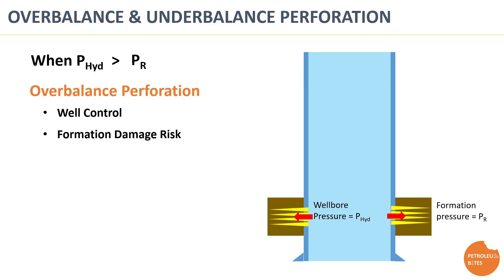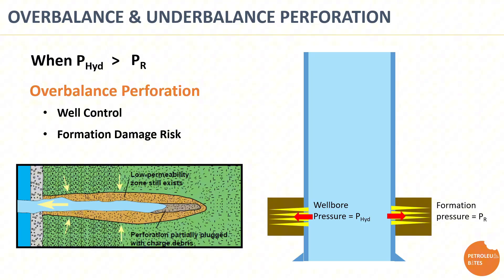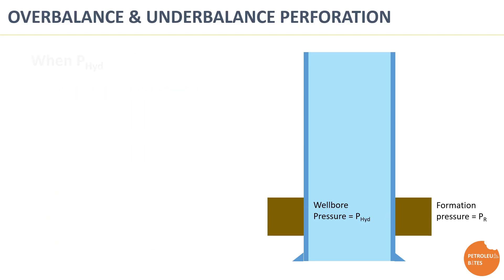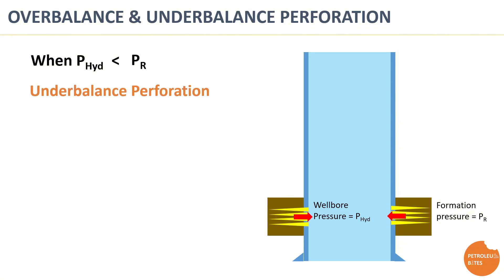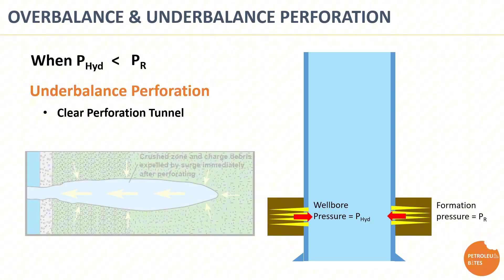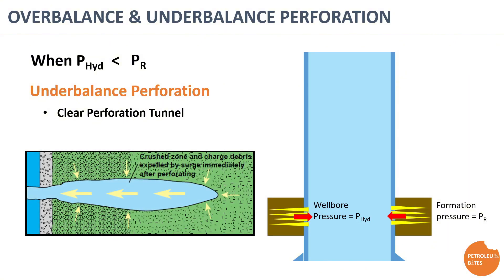However, overbalanced perforation risks damage to the reservoir rock as the perforation tunnel is not properly cleaned. Crushed sand and gun debris are kept inside the tunnel, which may affect productivity. When the wellbore hydrostatic pressure is lower than the reservoir pressure, this is known as underbalanced perforation. The pressure difference makes fluid move from the reservoir to the wellbore, forcing gun debris and crushed sand out of the perforation tunnel and giving better perforation cleanup. However, severe underbalance may cause solid movement and damage in the near-wellbore area.